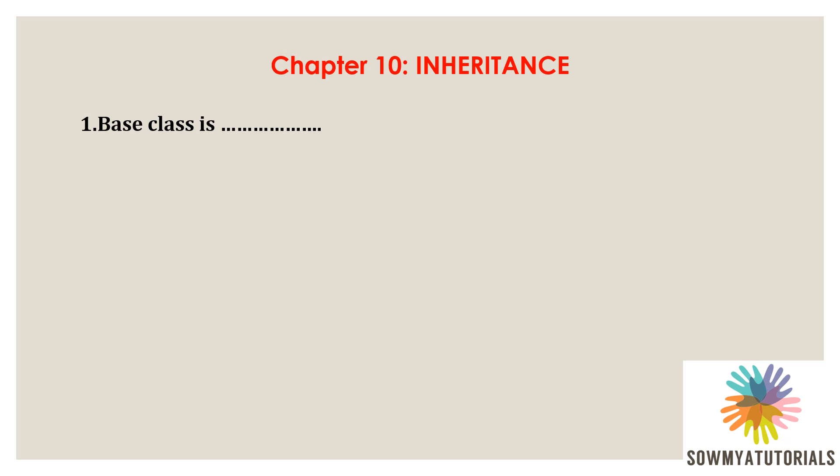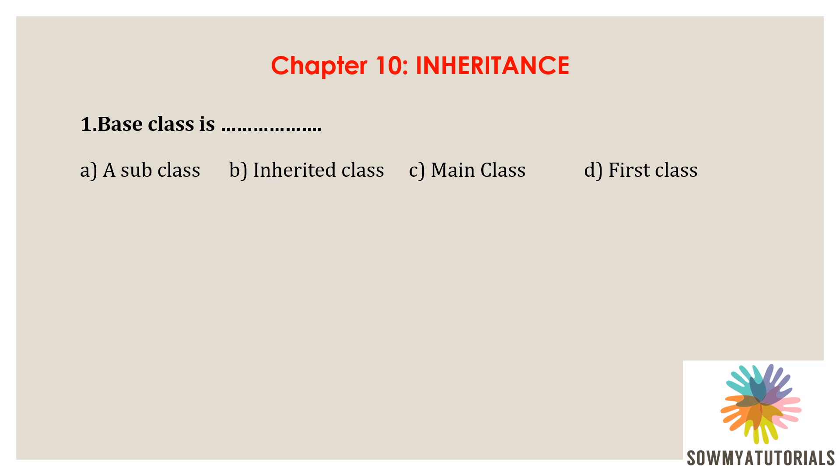First question: base class is — option A: subclass, option B: inherited class, option C: main class, option D: first class. The correct option is option B, inherited class, because the base class is the class whose properties are inherited by another class. We can call it an inherited class or a base class. Base class can also be called super class.